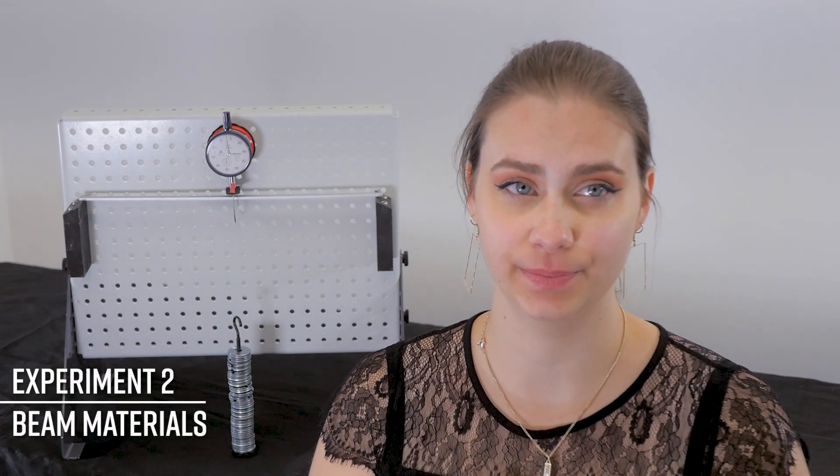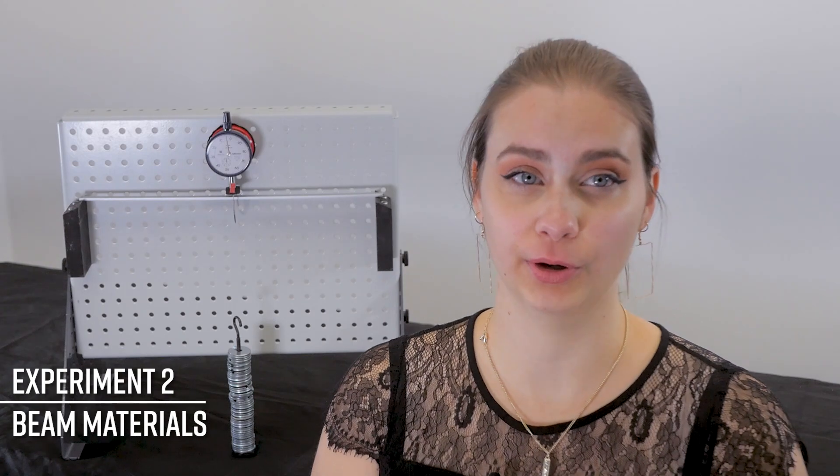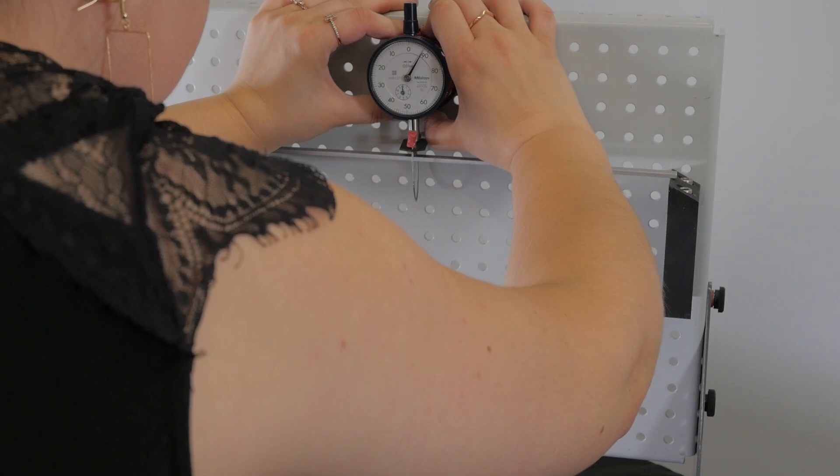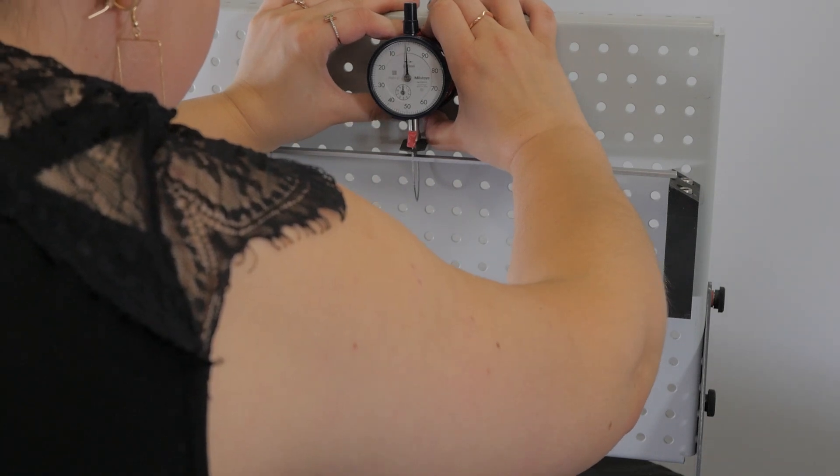Experiment two, beam materials. Young's modulus affects deflection. After measuring the dimensions of the beam, rest the aluminium bar across the supports. Adjust the dial indicator and wire stirrup to the middle of the beam at 180 millimetres.